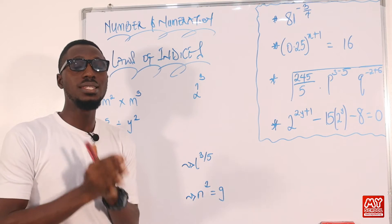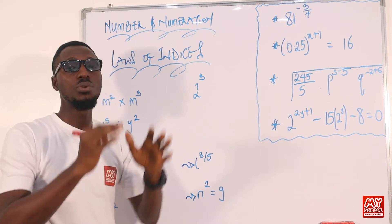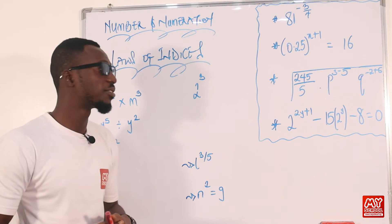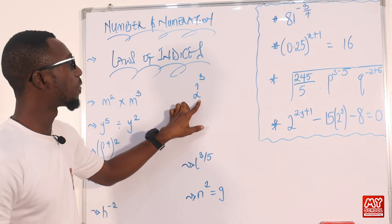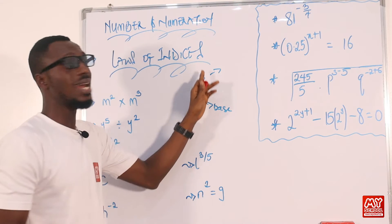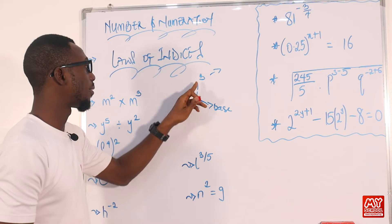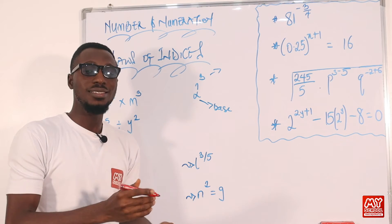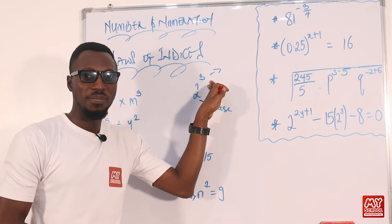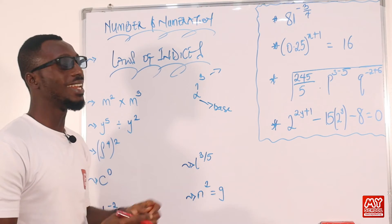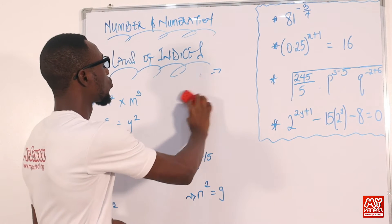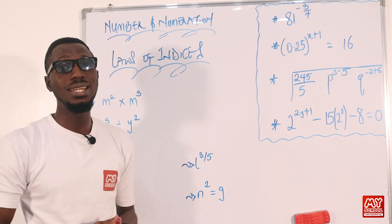It tells you that a certain value or a certain number has been raised to a certain amount, or it has been multiplied to itself a certain number of times. So the number we have here is referred to as the base. And what is written to the upper right-hand side is referred to as the index, the exponent, or the power. So we can say 2 raised to the power of 3. This is what indices entail. So what we are doing together now is we are going to examine some of the laws that are attached to indices.